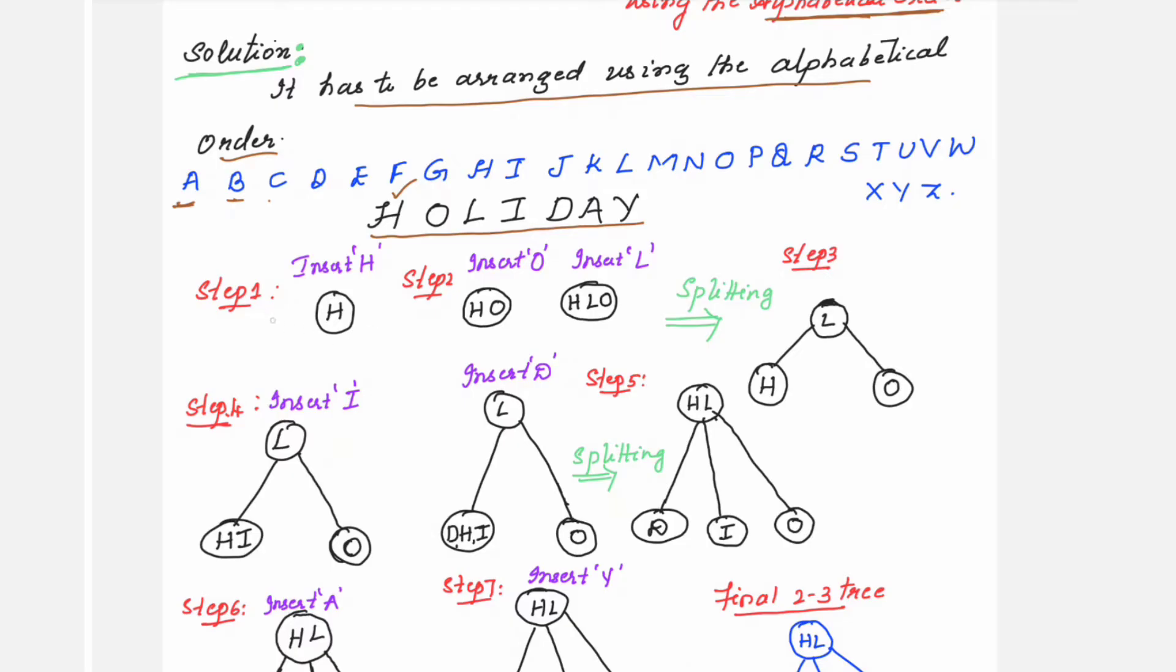The first letter is H. In step 1, we insert the letter H. No problem, the first letter, so H is the only node in the tree. Next is O. Where will you place O? O is after the letter H, so it will be here. The third element is L. Where will you place L? In the same node, you need to place the letter L. L is in between H and O. You're going to insert H, L, O in this manner.